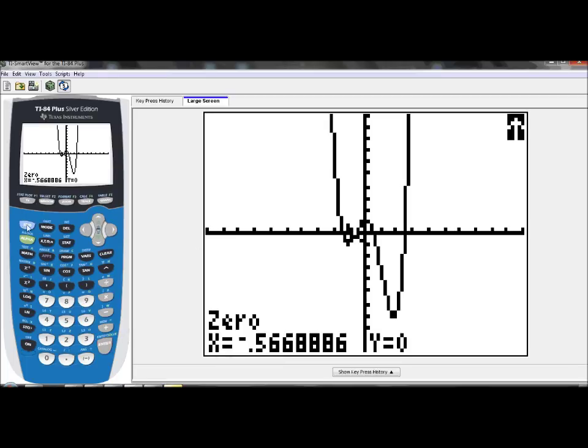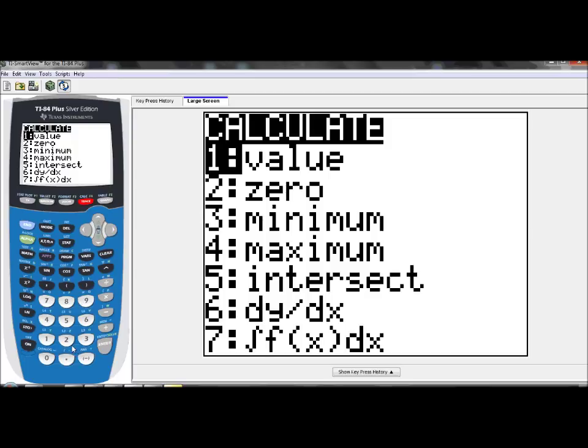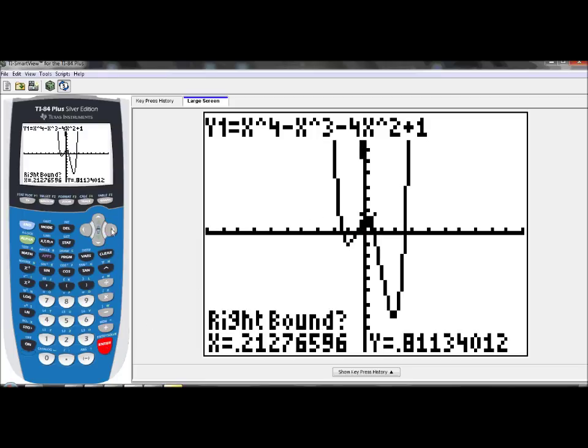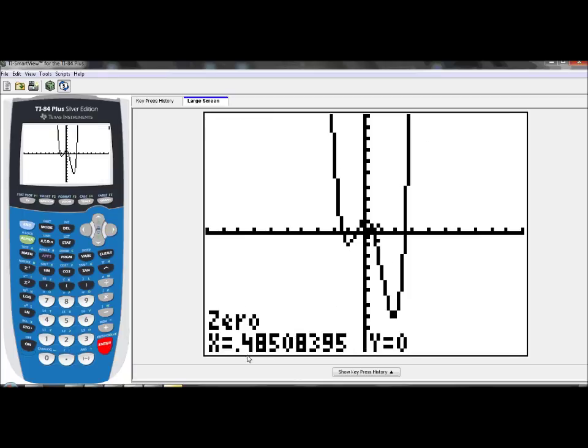Let's do it again. So second, calc, option two. This is the third zero. I want to go to the left of it, so I'm going to move up. I'm to the left of that zero. I'm going to hit enter. Hit the right cursor so I can mark right bound. Enter. And there's my third zero, 0.485.